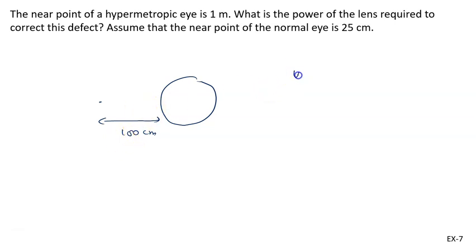u is given to us as minus 25 centimeter, but the image should be at 100 centimeter with the help of the lens, so v is given to us as minus 100 centimeter. Now we will calculate the focal length: 1 upon f equals 1 upon v minus 1 upon u.